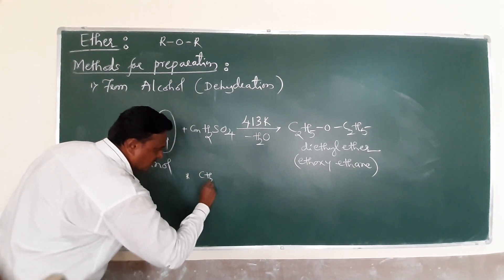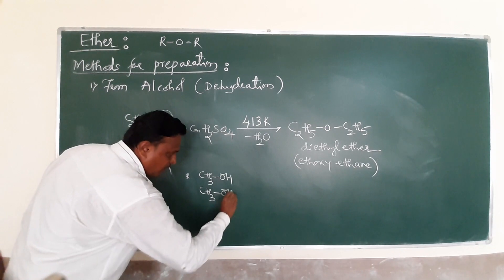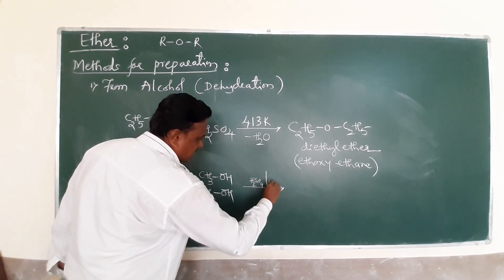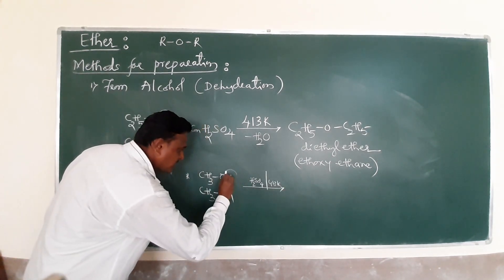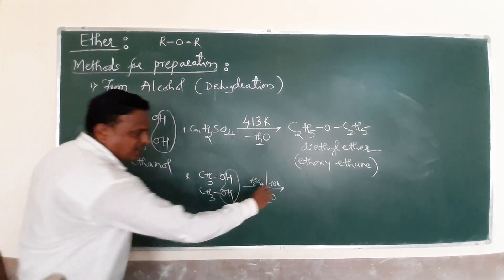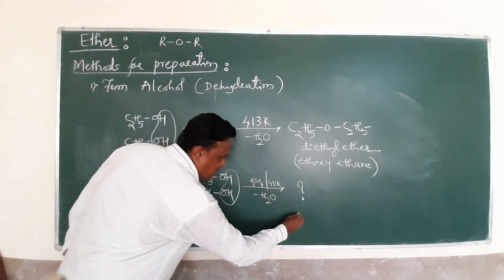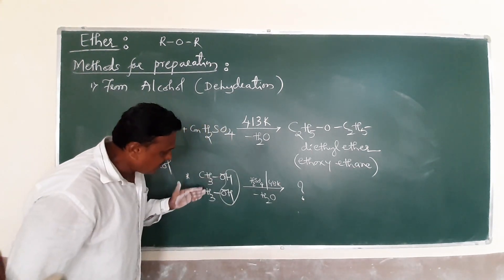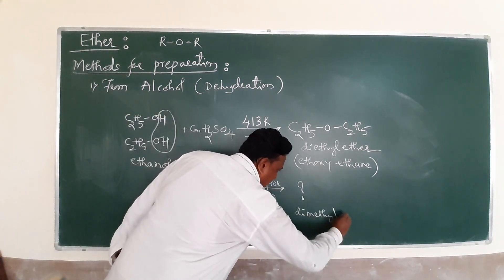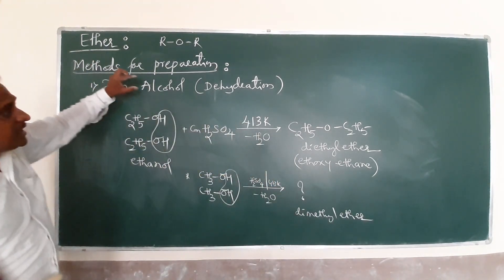Can you use this with methyl alcohol? Methyl alcohol under dehydration with sulfuric acid at 413 Kelvin - removal of water. The answer is CH3-O-CH3, dimethyl ether. This is the first simple preparation of ether from alcohol.